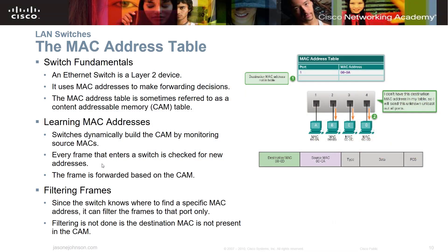Now let's switch to LAN switches. Switches operate at layer two of the OSI model. An Ethernet switch is a layer two device — when you hear 'layer two device,' you know it's a switch. Switches use MAC addresses to make forwarding decisions and do not need IP addressing, since IP addressing is at layer three. The MAC address table is sometimes referred to as a content addressable memory, or CAM table. Switches dynamically build the CAM by monitoring source MACs.